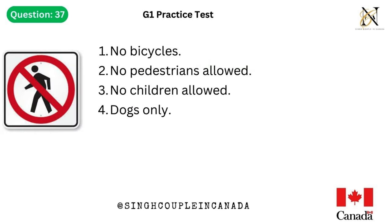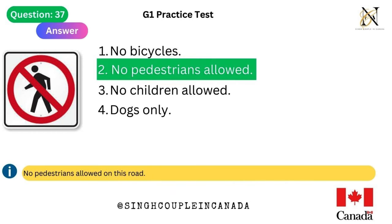Question 37. This traffic sign means: 1. No bicycles. 2. No pedestrians allowed. 3. No children allowed. 4. Dogs only. Answer is 2. No pedestrians allowed on this road.